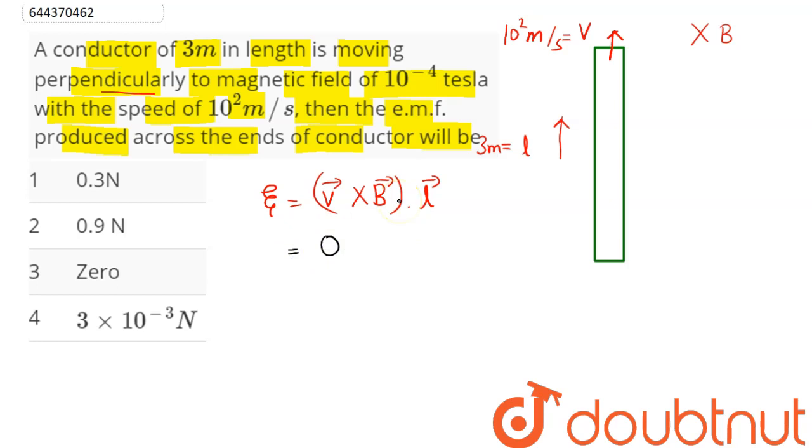As here we can see, v cross b will be along minus, let's say, x direction, so making an angle of 90 degree with length vector. So v cross b will be vb sin 90. But here, with l vector, this will be making an angle of 90. So dot product will give us l cos 90. Hence this comes out as 0. Hence the induced EMF will be equal to 0.